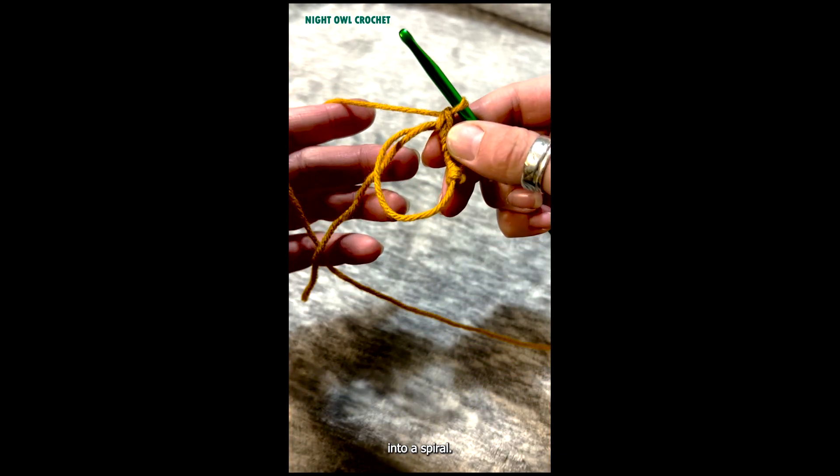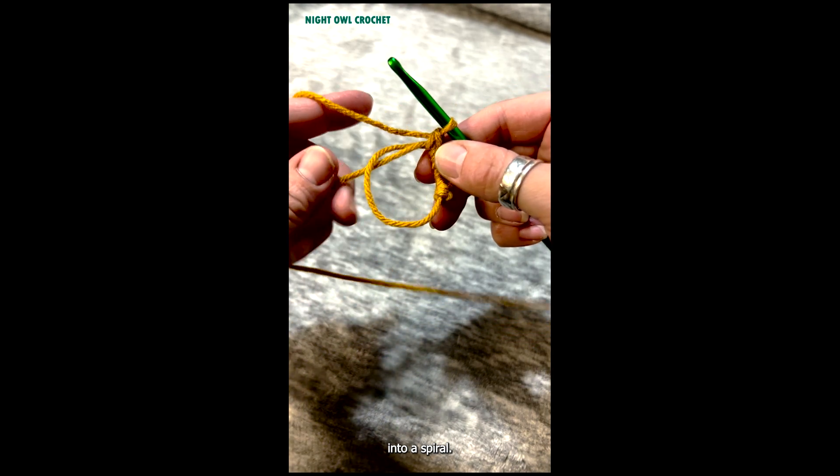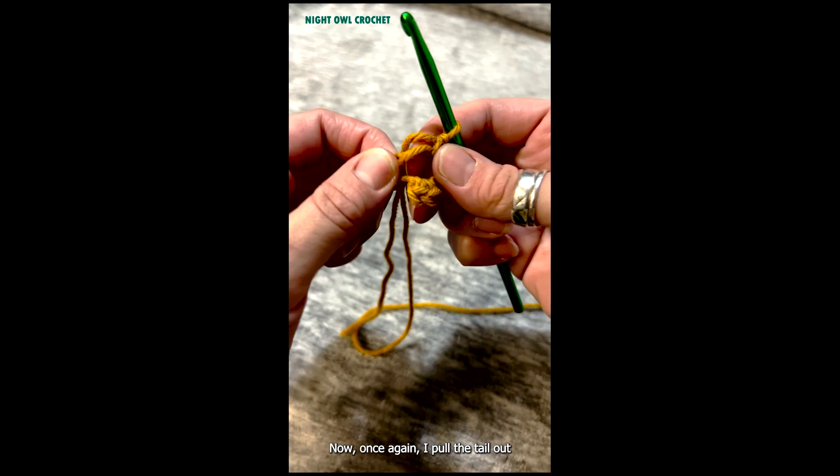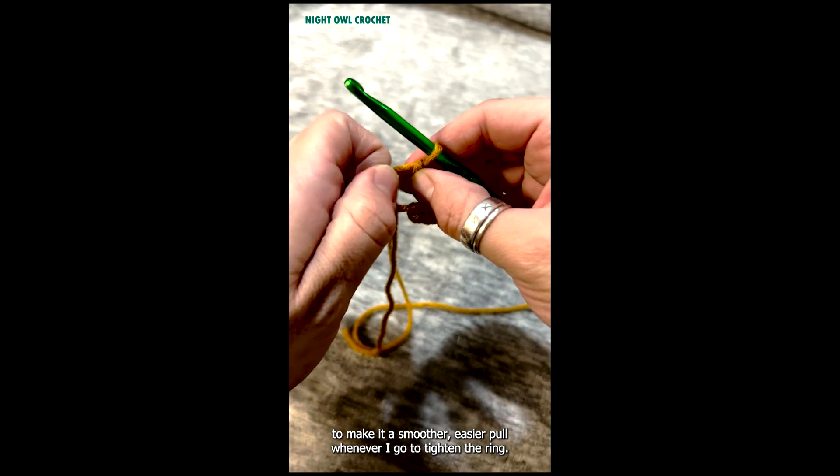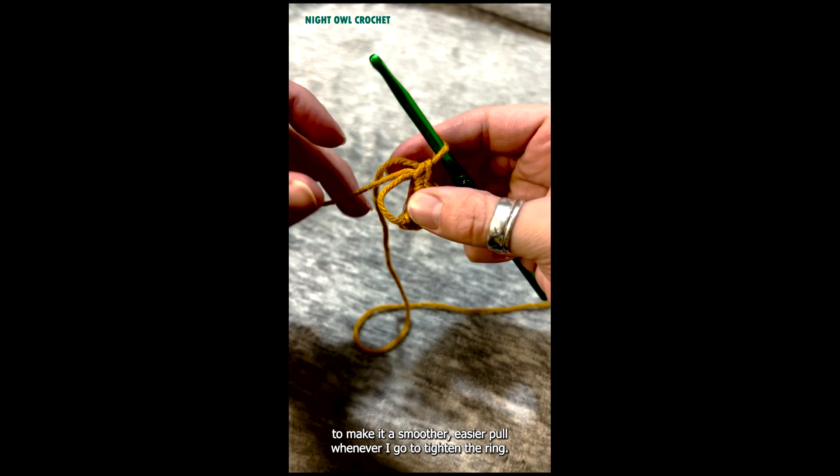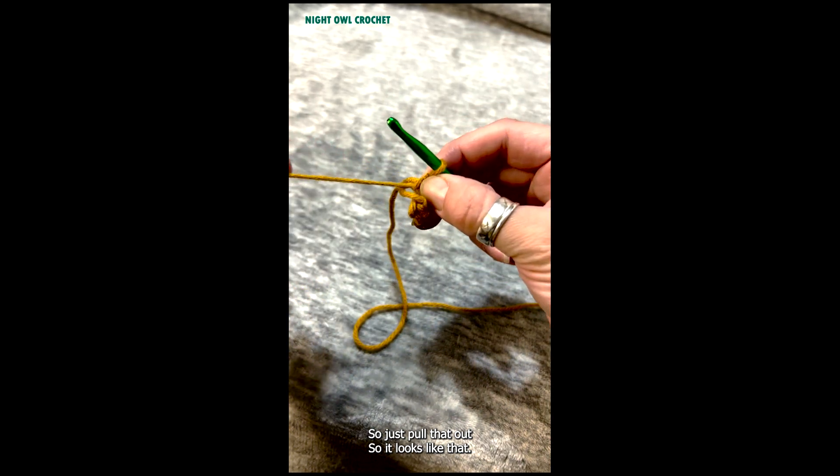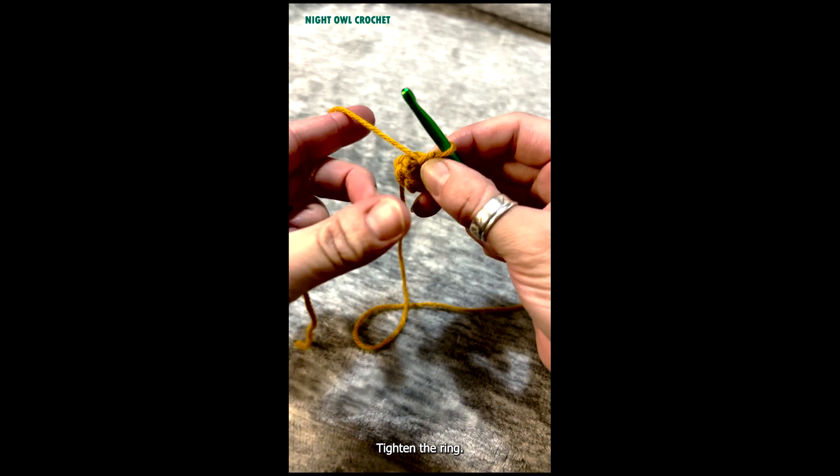Now once again I pull the tail out to make it a smoother, easier pull whenever I go to tighten the ring. So just pull that out so it looks like that, tighten the ring.